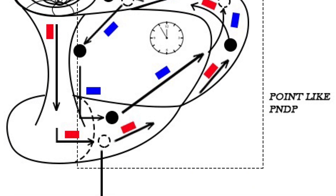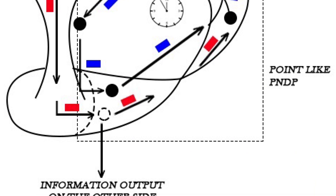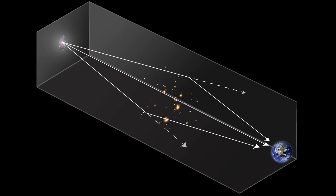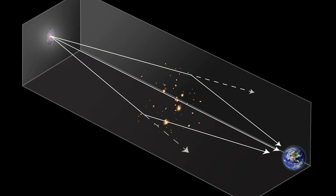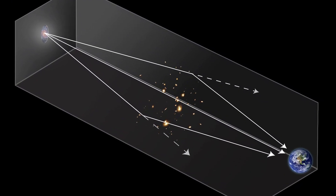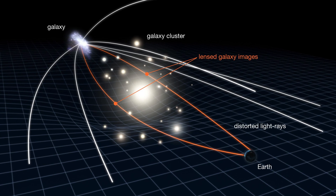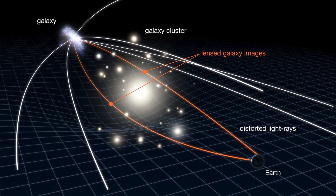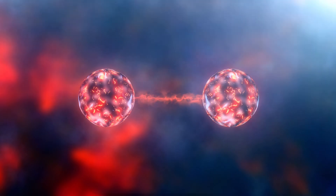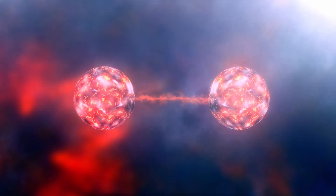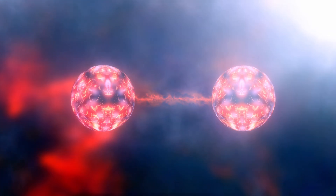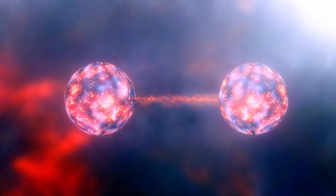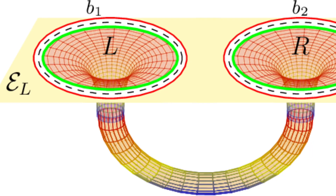Such observations include gravitational lensing effects that could reveal the presence of these mysterious structures. The interplay between wormholes and quantum entanglement has also become a topic of intense investigation.